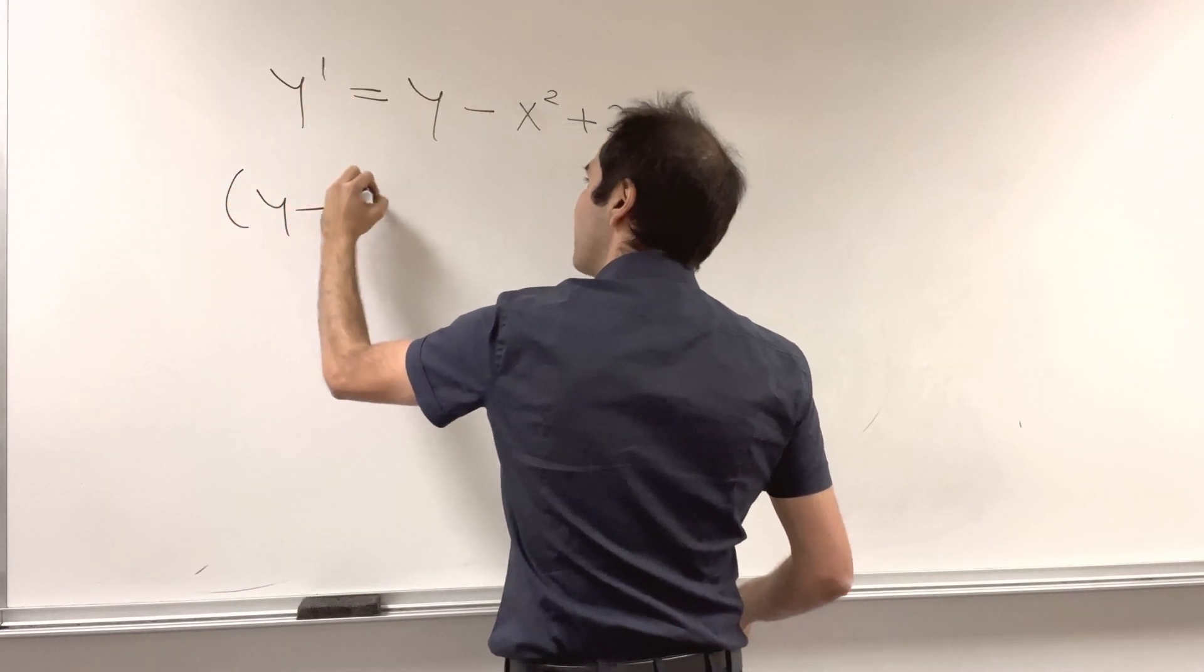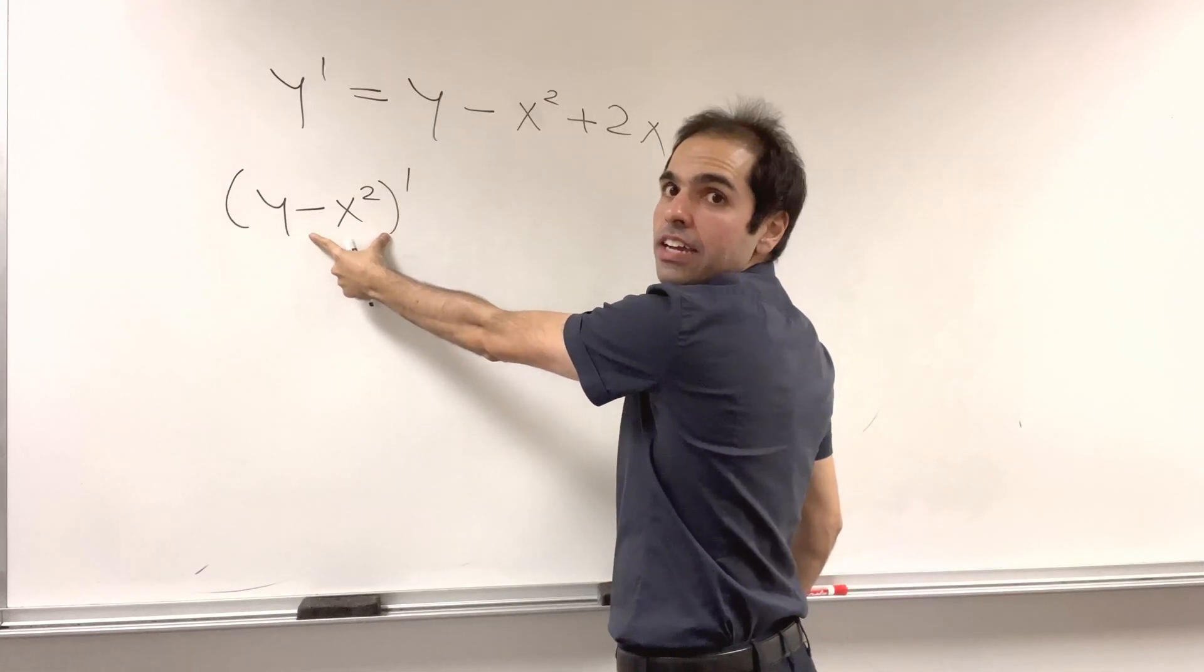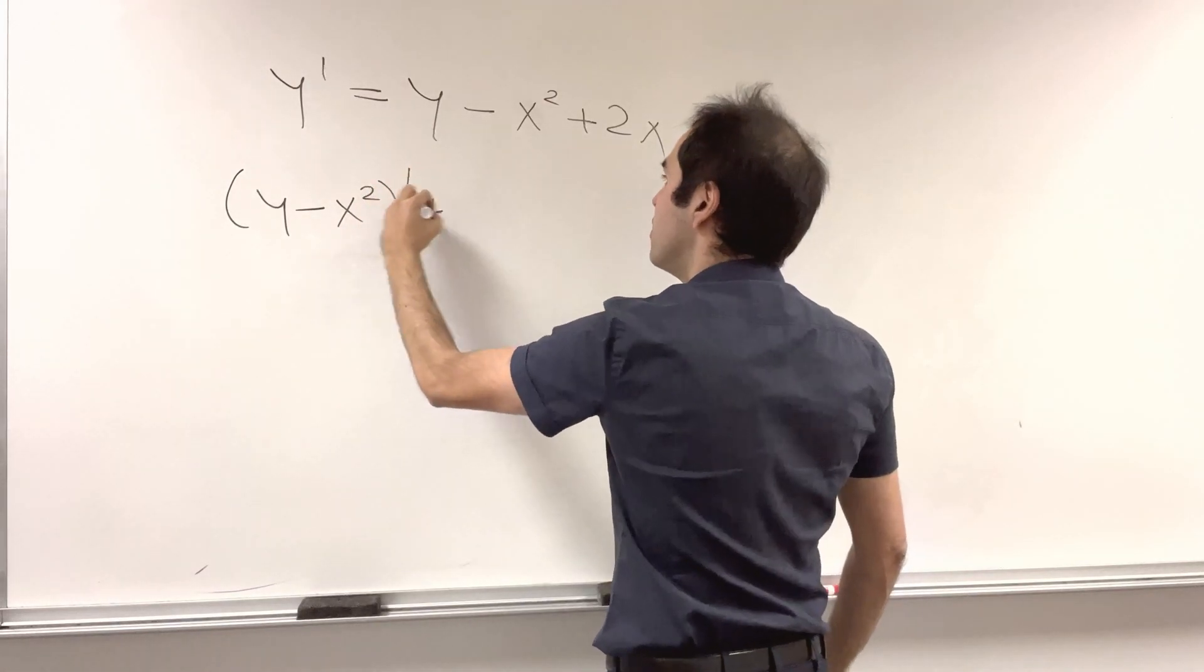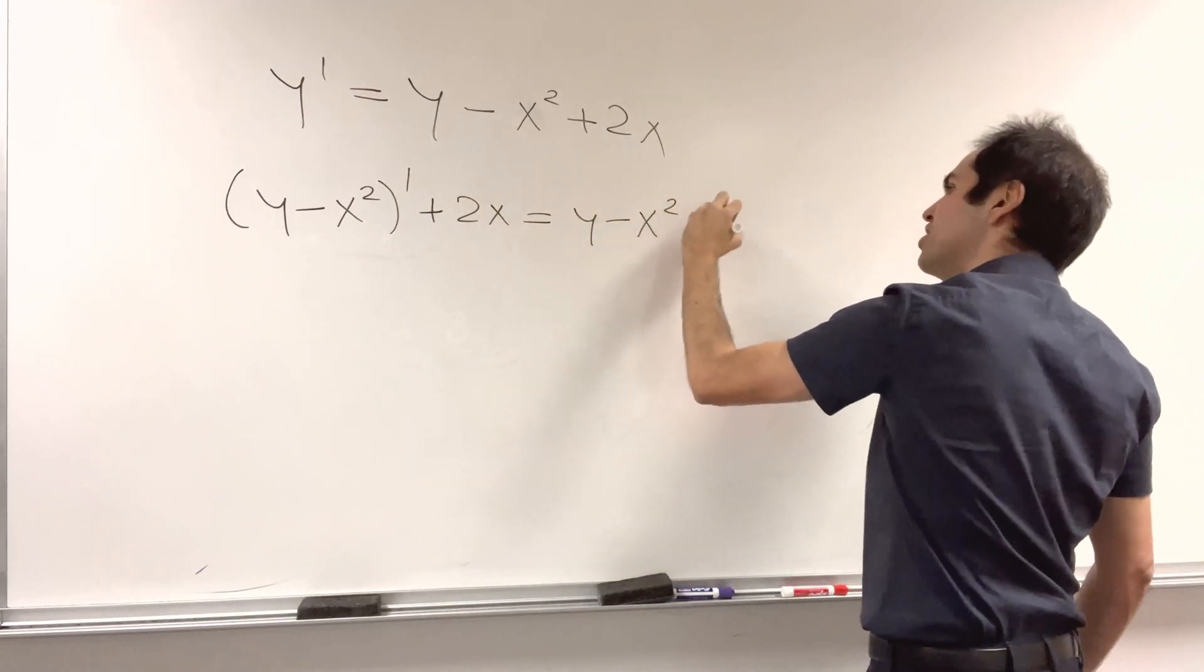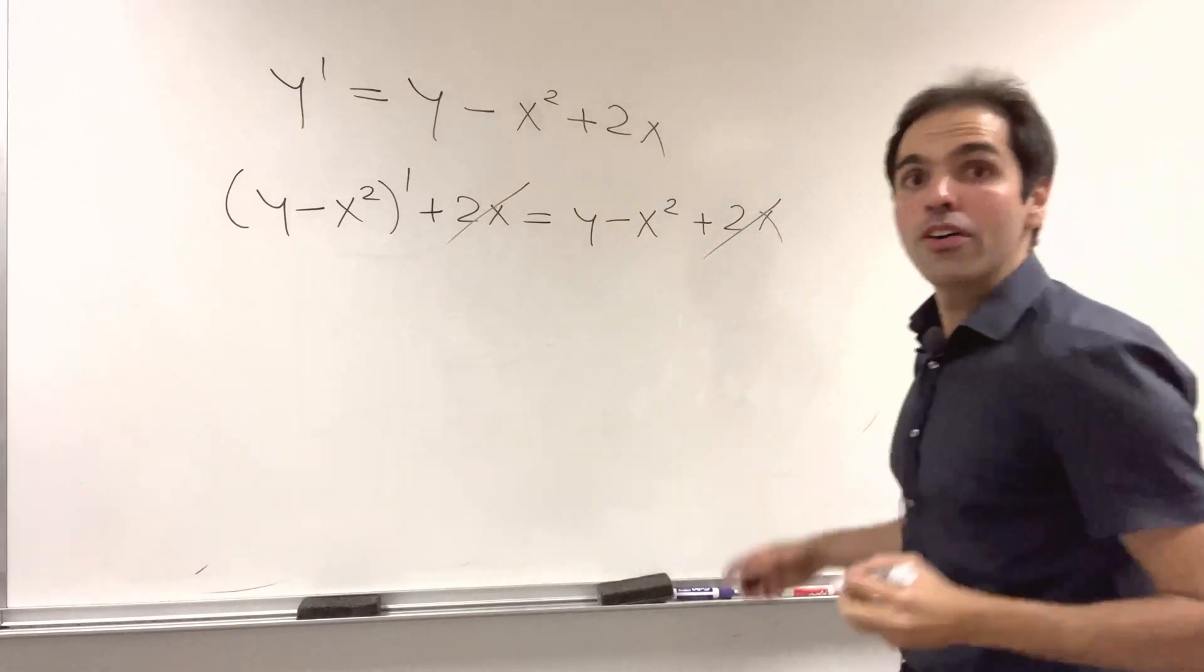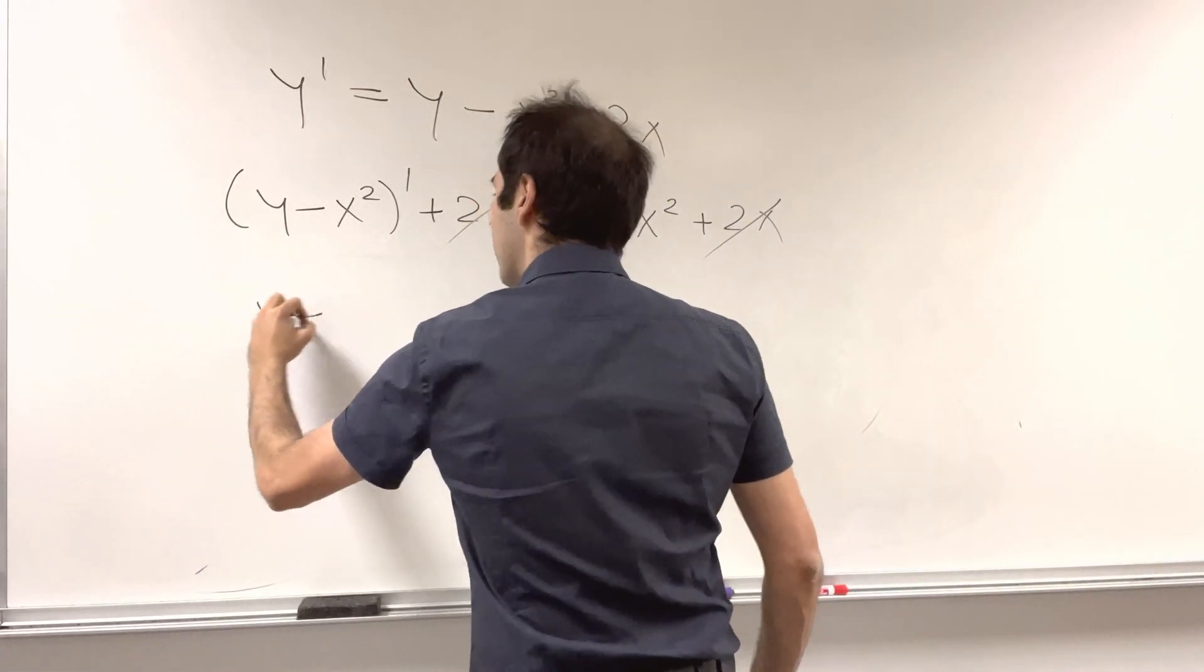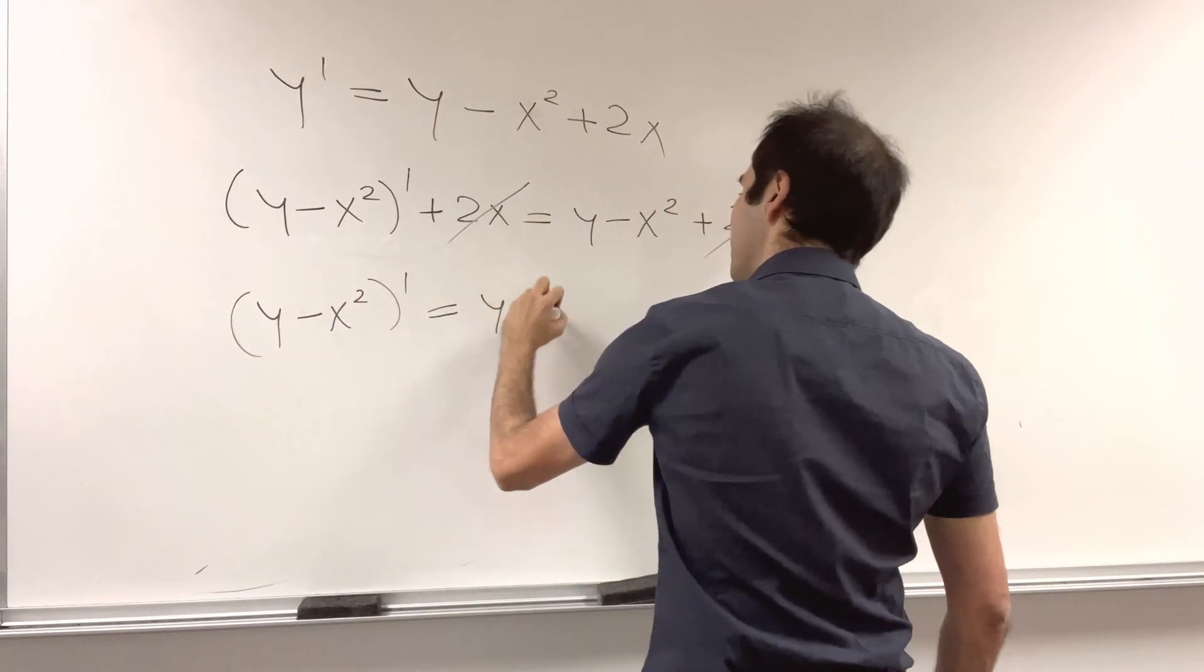Y minus x² prime, well, the derivative of minus x² is 2x. So let's add 2x, and this y minus x² plus 2x. This cancels out, and lo and behold, we get y minus x² prime equals y minus x².